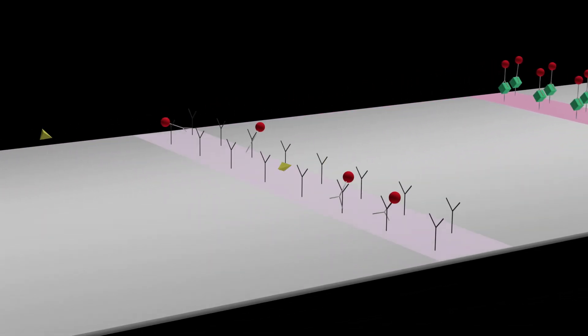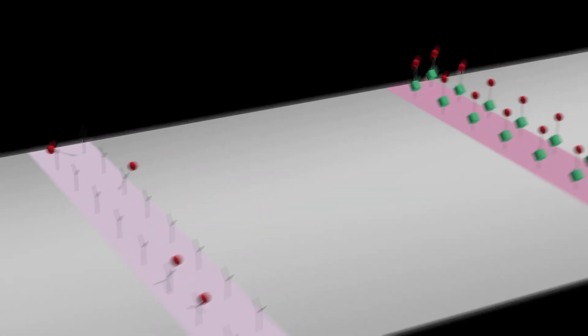Excess color labeled antibody binds to the anti-species antibody sprayed into the control line. The control reaction occurs regardless of the presence or absence of toxin molecule. This assures the user that the test worked correctly.